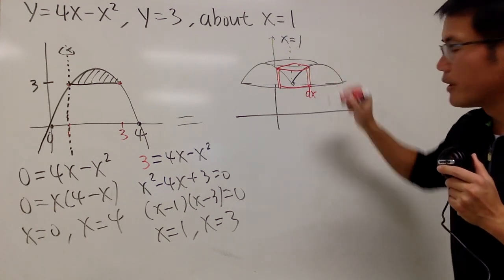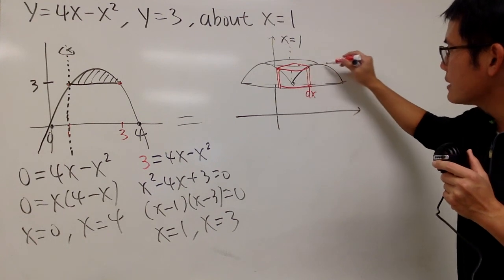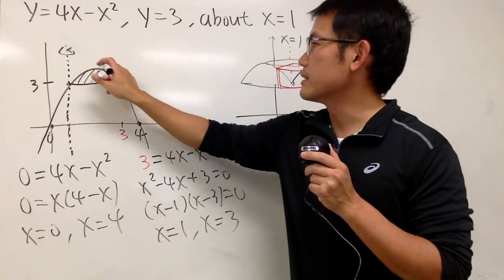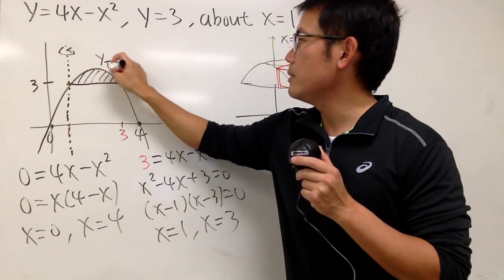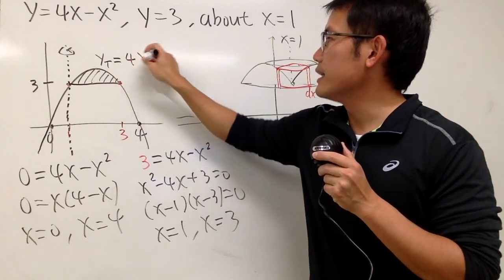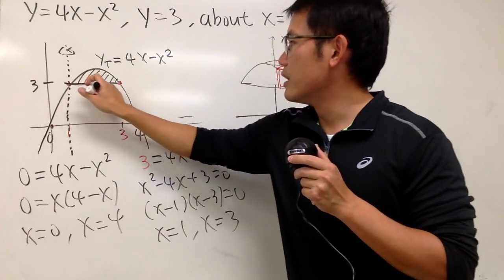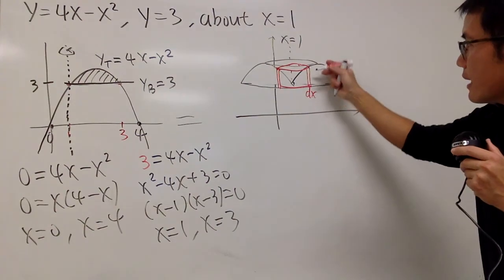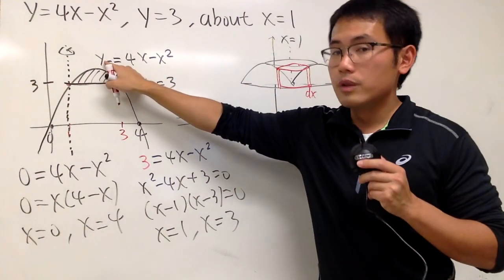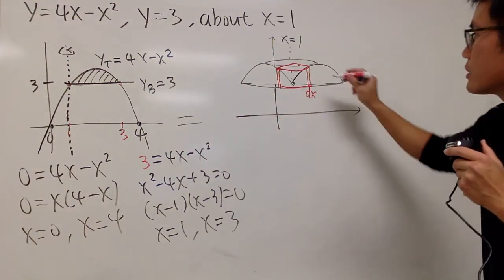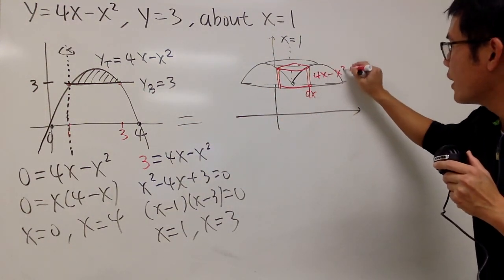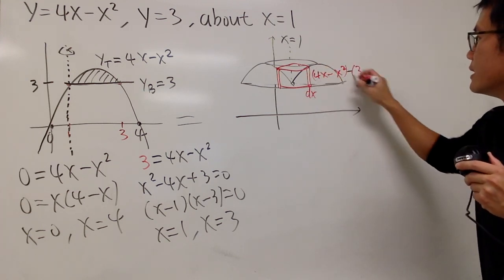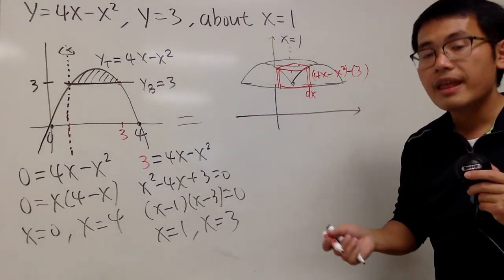And then, the height is from here to here. Well, the top is our y, and then right here is when y equals 3. Remember, let's just look at this. On the top is y, and let me just put on t. That's the y on the top, which is 4x minus x squared. And then, this right here, it's actually the y on the bottom, which is just 3. Okay? So, in fact, from here to here, it's just the y on the top minus y on the bottom, which is going to be 4x minus x squared, and then minus 3. Right? So, be really careful with this part. So, that's going to give us the height.